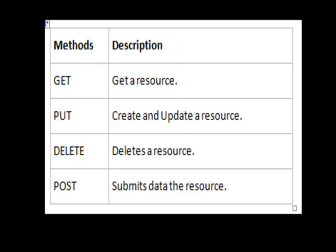On the web you primarily do four operations on a resource: get a resource, create or update a resource, delete a resource, and post some information to the resource. The 40-year-old HTTP web has four methods that allow us to do these operations: HTTP GET gets a resource, HTTP PUT creates and updates a resource, HTTP DELETE deletes a resource, and HTTP POST submits data to the resource. Taking these well-known methods and combining them with your resource makes your interfaces uniform.